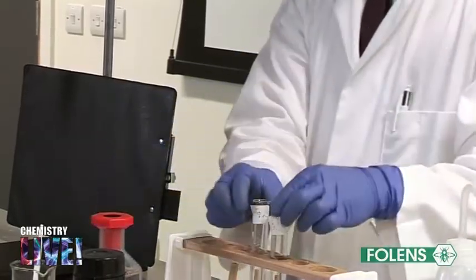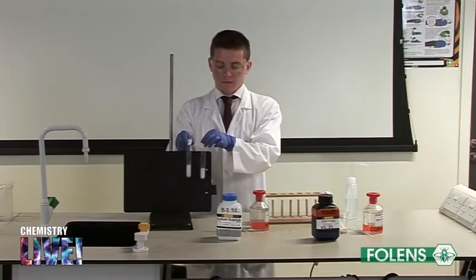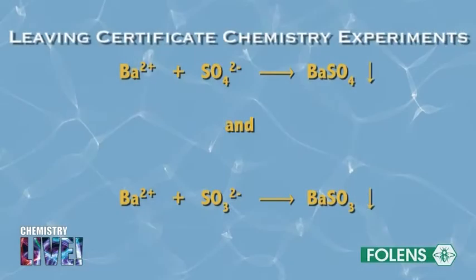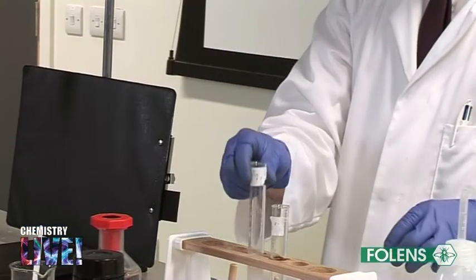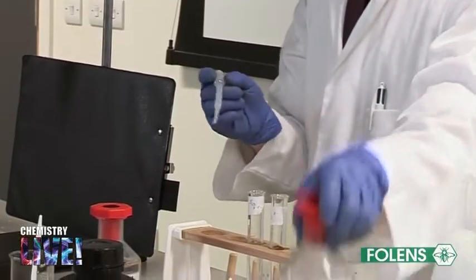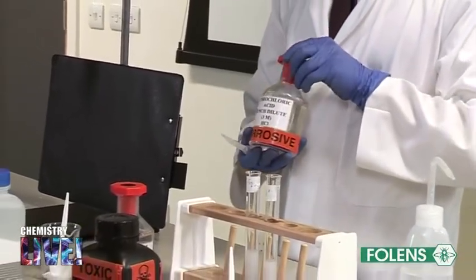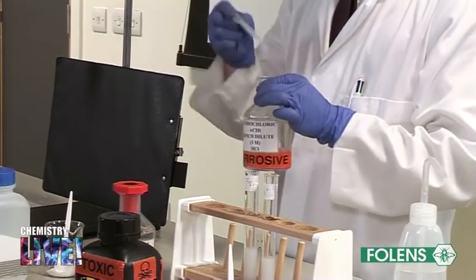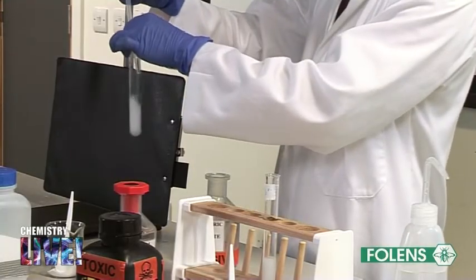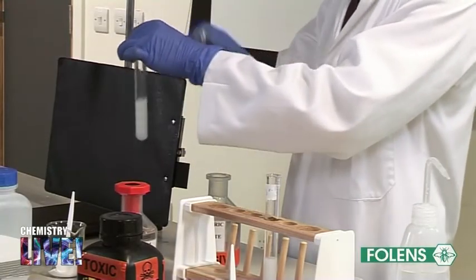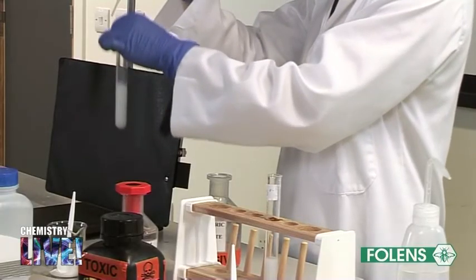The insoluble material formed is called barium sulfate or barium sulfite. These compounds are formed when the barium ions from the barium chloride solution combine with the sulfate ions and sulfite ions dissolved in the water. To distinguish between the barium sulfate and barium sulfite, add about a quarter of a test tube of dilute hydrochloric acid to each of the above test tubes and shake gently. Barium sulfate is insoluble in dilute hydrochloric acid.